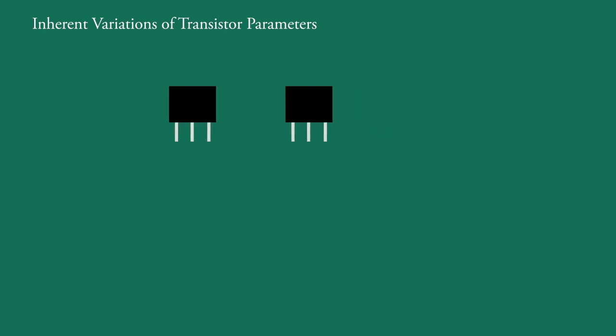Two transistors, even of the same type, do not have the same parameters like β, VBE, etc.